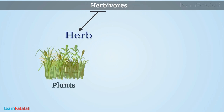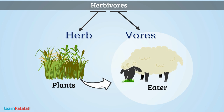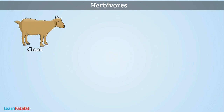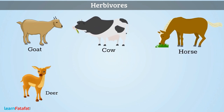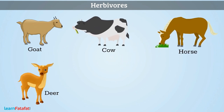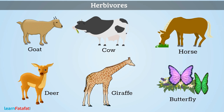Herbivores: 'Herb' means plants and 'Vores' means eaters. The animals which obtain their food only from plants are called Herbivores. Examples are Goat, Cow, Horse, Deer, Giraffe, Butterfly, etc.